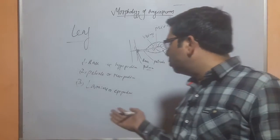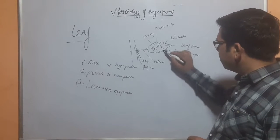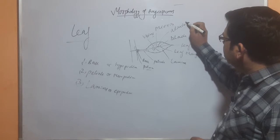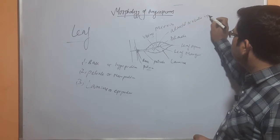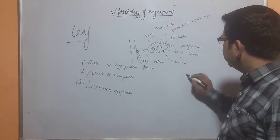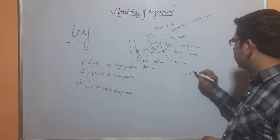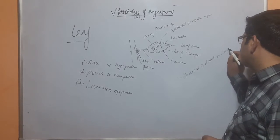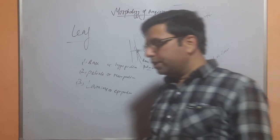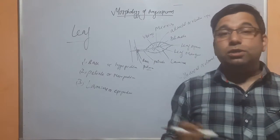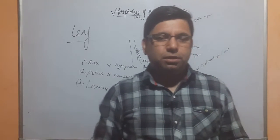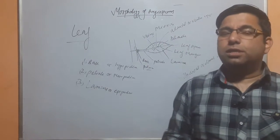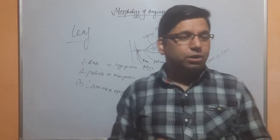If you talk about angiosperms, the lamina has two sides. The upper side is called the adaxial side, or ventral or upper side. The lower side is called the abaxial or lower surface. In monocots, it is an isobilateral leaf, while in dicots it is a dorsiventral leaf.